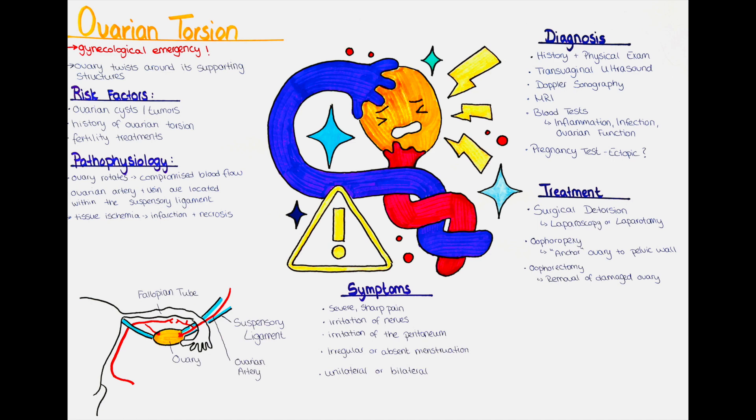In certain situations where the torsion has caused severe damage to the ovary or if the ovary is non-viable, removal of the affected ovary, called oophorectomy, may be necessary. This is more likely if the torsion has been present for a prolonged period or if there are other complicating factors.